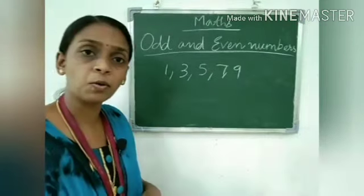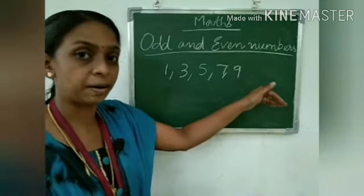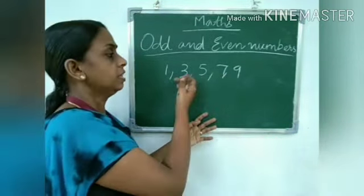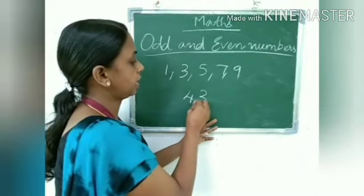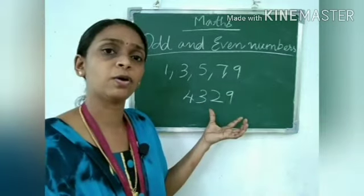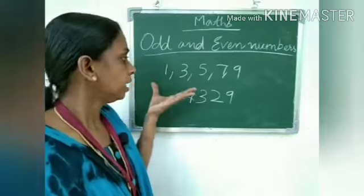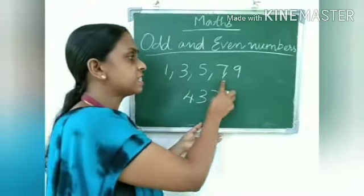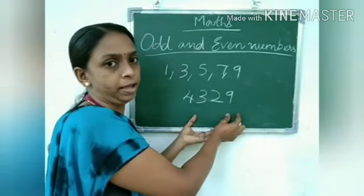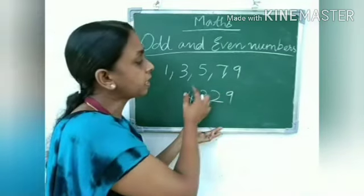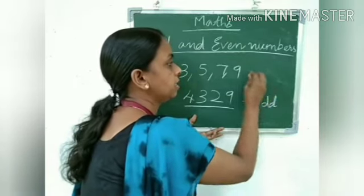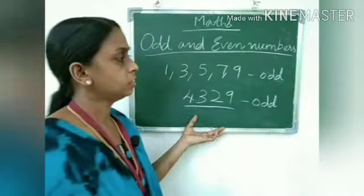Odd numbers are numbers where the ones place contains one of these digits: 1, 3, 5, 7, or 9. For example, take the four-digit number four thousand three hundred and twenty-nine. To identify whether it is odd or even, we look at the ones place. If the ones place has any one of 1, 3, 5, 7, or 9, that number is called an odd number.